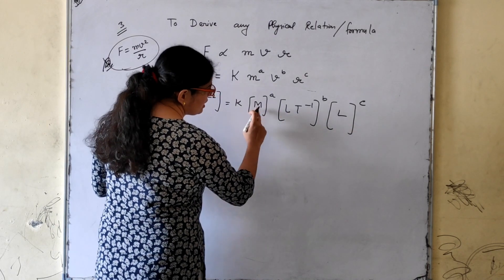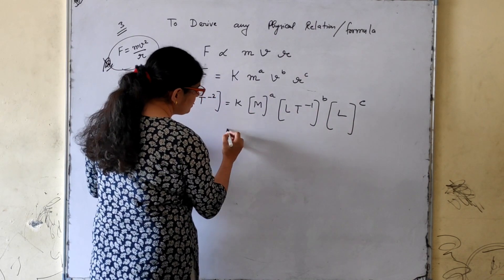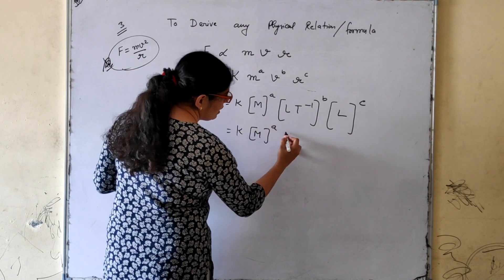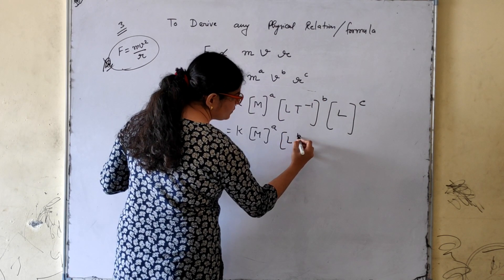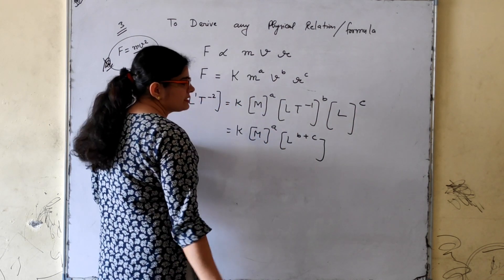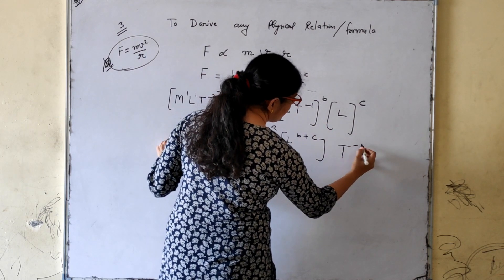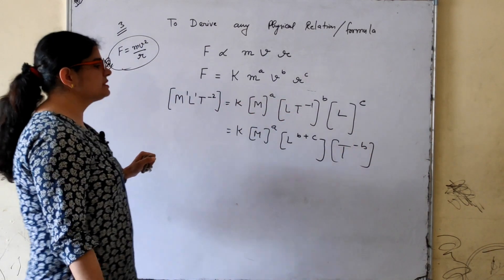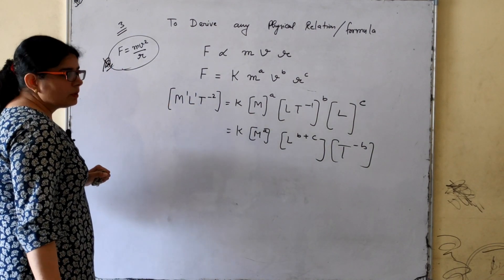So we write: M¹L¹T⁻² = k · M^a · (LT⁻¹)^b · L^c. Now M appears only once on the right. L appears in velocity as L^b and in radius as L^c, giving L^(b+c). T appears only in velocity as T^(−b). So we get: M¹L¹T⁻² = k · M^a · L^(b+c) · T^(−b).